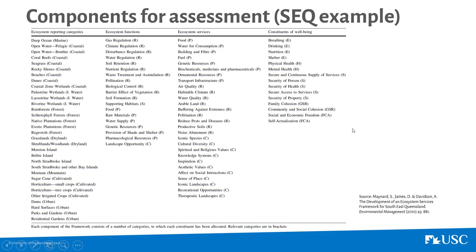This particular table comes from a study that David James and Simone Maynard were involved in, covering Southeast Queensland. It's a useful framework where you have ecosystem reporting categories such as seagrass, beaches and dunes, coastal zones, and native plantations. The ecosystem functions that relate to those include gas regulation, climate regulation, soil formation, and pollination. And then the different ecosystem services produced — water for consumption, genetic resources, a habitable climate, water quality, or arable land — and how those relate to different constituents of well-being such as nutrition, shelter, and security.